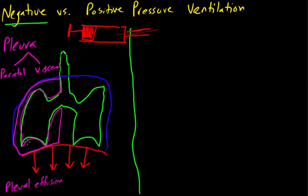A pleural effusion is bad for a lot of different reasons. Normally our parietal and visceral pleura are touching. The reason it's called visceral pleura is because the lungs are an organ - viscera means organ. So any layer that lines our organs can be called the visceral layer of our pleura. If I say take out the body's viscera, I'm really just saying take out the body's organs.